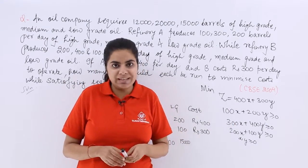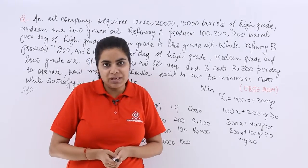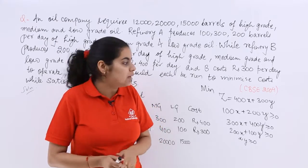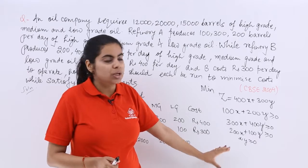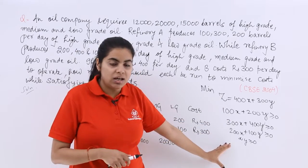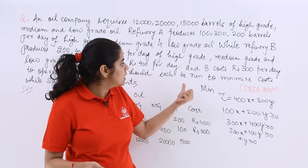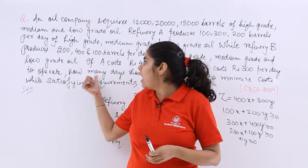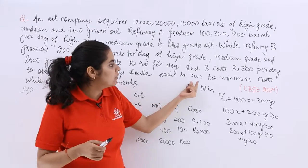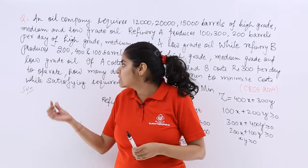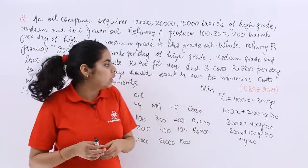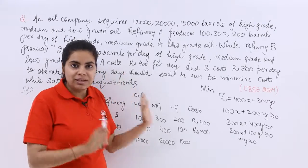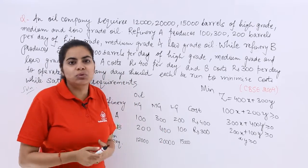Now this is there as minimum and we have this objective function. These are the constraints. Now what is the next thing that has to be taken care of? The next thing that we have to take care of is regarding the formulation of these constraints into graph. So see the question we are required after this information. How many days should each be run to minimize the cost while satisfying the requirements? So we will erase the board and then we will move to the graph.